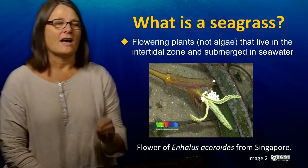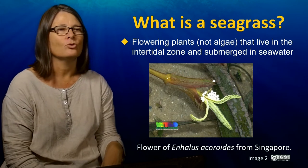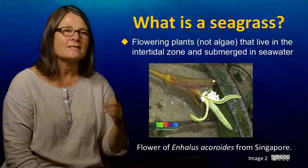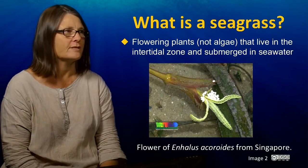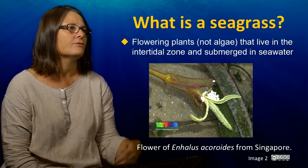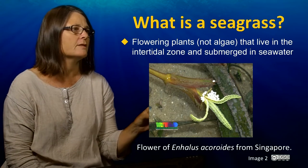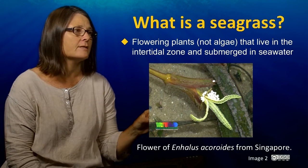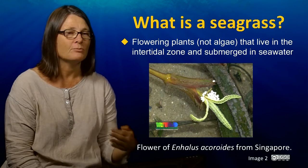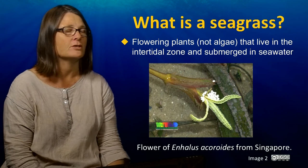What actually are seagrasses? Seagrasses are not algae — in this lecture I sometimes call algae seaweeds or macroalgae, but seagrasses definitely don't fall into those categories. They're actually higher plants, so flowering plants, that live submerged in seawater. This picture is to remind you of that — it shows the flower of the large seagrass Enhalus from Singapore, provided by Ria Tan, who maintains a website called Wild Singapore.